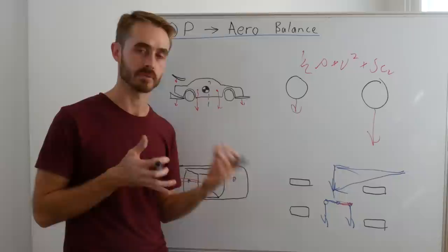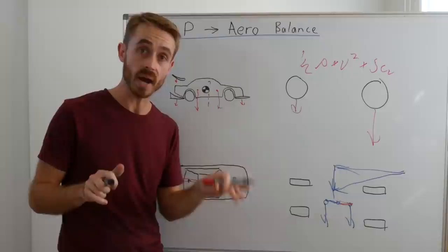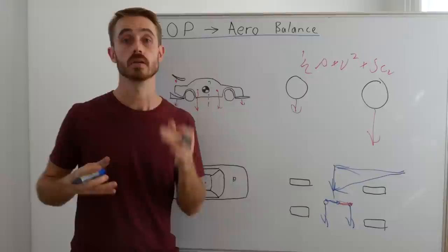The rear wing, no near ground effect, so as ride height changes it doesn't make a huge difference. The front splitter, quite close to ground effect. Ground effect has quite a significant effect on how much downforce this is making.